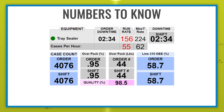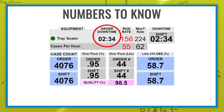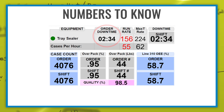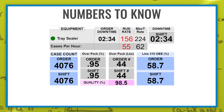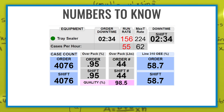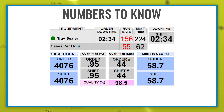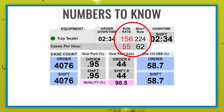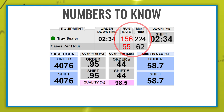From the display above, we see that the line has 2 hours and 34 minutes of downtime for the current production order. That order has a runtime of 6 hours and 20 minutes to this point. Also, the line is running at 156 packages per minute, but has a max key rate of 224 packages per minute.